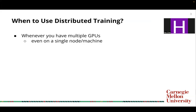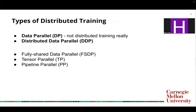So when should we use distributed training? A short answer is whenever you have multiple GPUs, even though you only have one node or one machine for distributed training. And PyTorch naturally supports multiple types of distributed training. In this presentation, we will mainly cover the first two, which is data parallel and distributed data parallel.